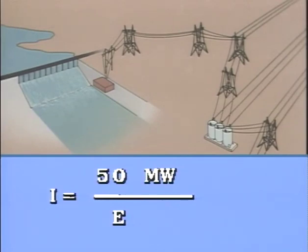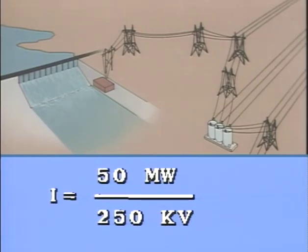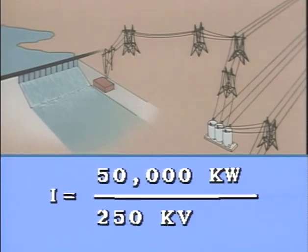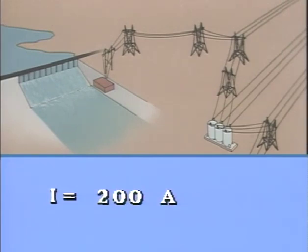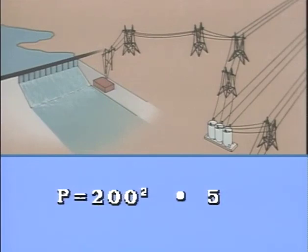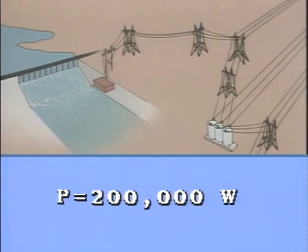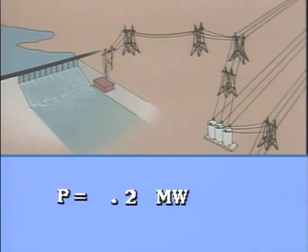This equation can't be solved unless the prefixes for power and voltage are the same, so the next step is to change the units of power from megawatts to kilowatts. One megawatt equals 1,000 kilowatts, so I equals 50,000 kilowatts divided by 250 kilovolts. Working out the division leaves I equal to 200 amps. This current value can be used in the equation P equals I squared R. Substituting the values, the equation reads P equals 200 squared times 5. Squaring 200 gives us 40,000 times 5, which equals 200,000 watts — or 0.2 megawatts of power loss in the 50-mile line.